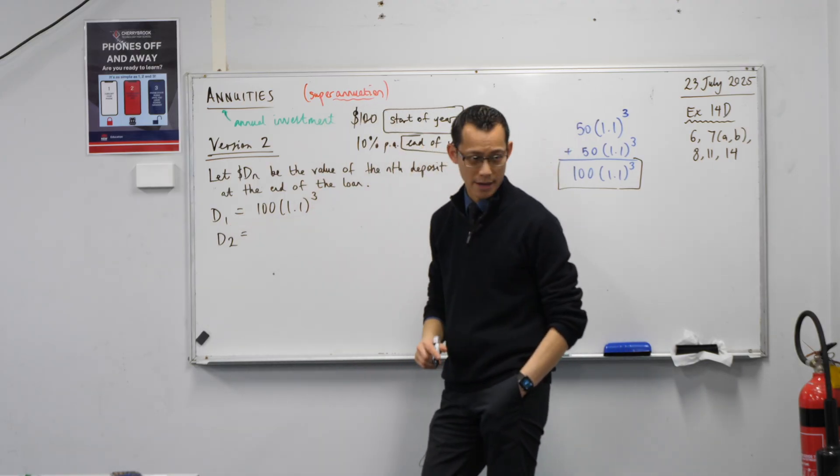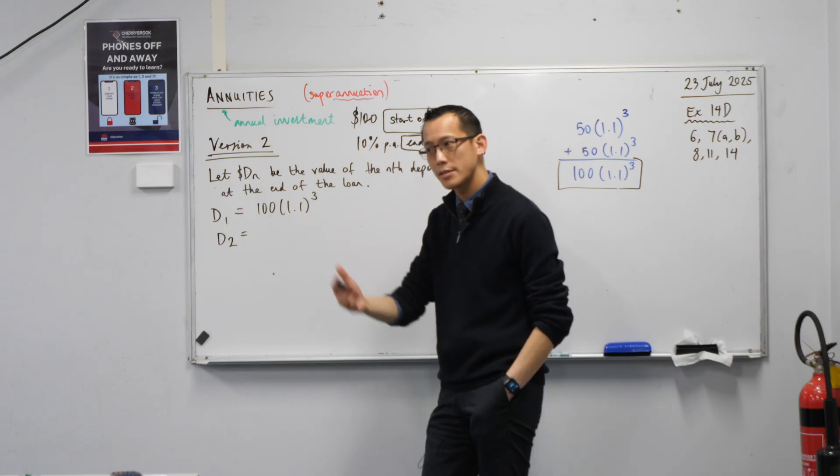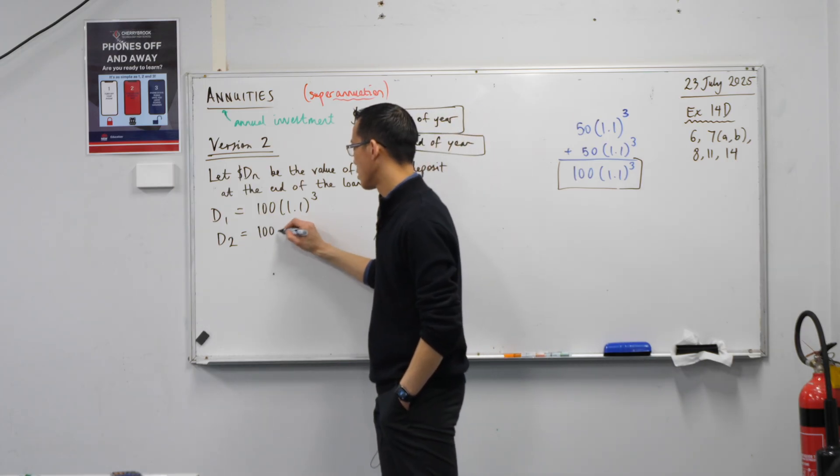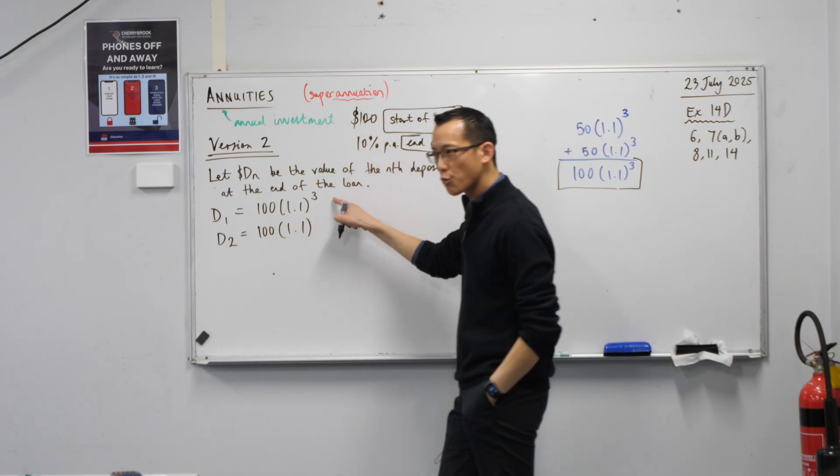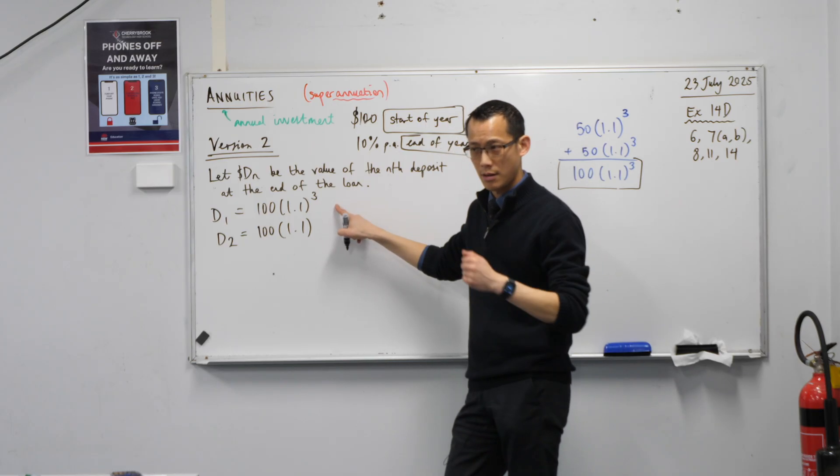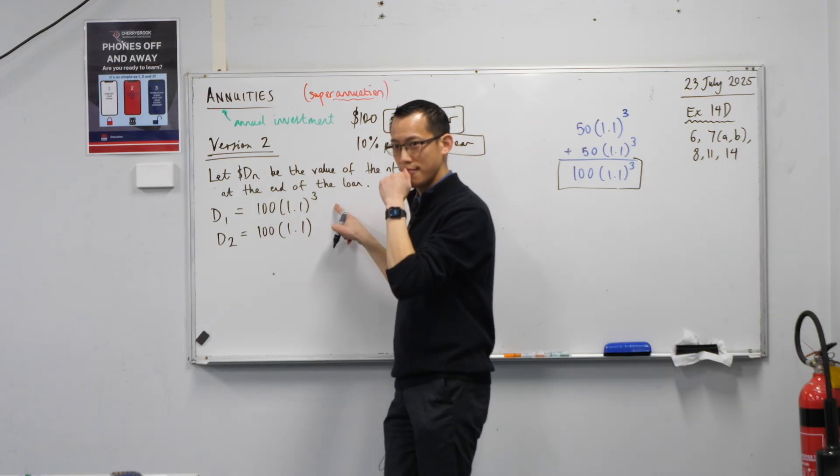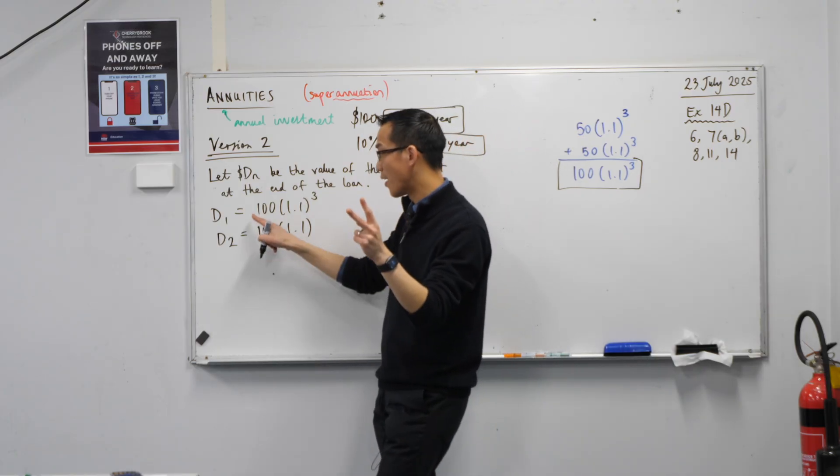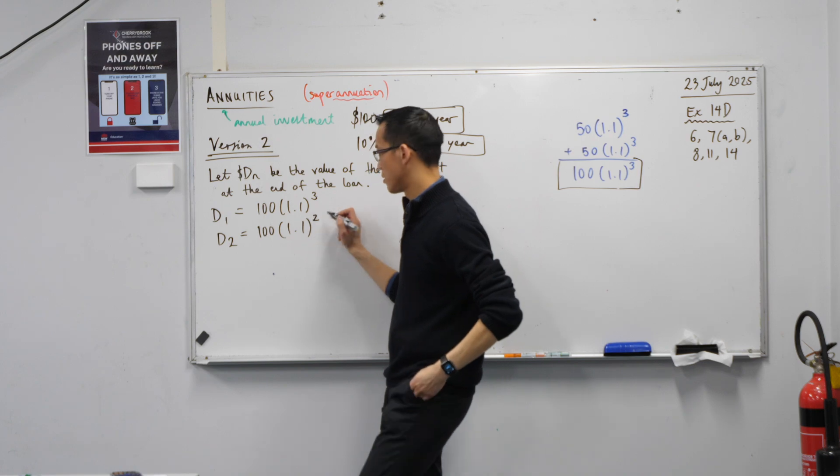What about the second amount? Well, we put it in 12 months later, right? So it's still $100, but it doesn't have three interest calculations applied to it. How many does it get? It gets two. It gets one less than this one. So there's two.